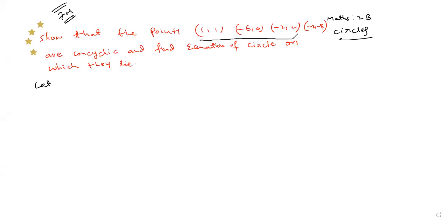To find the equation of the circle, take the first three points and find the equation of the circle passing through them. Let the equation of the circle be x² + y² + 2gx + 2fy + c = 0, equation number 1.